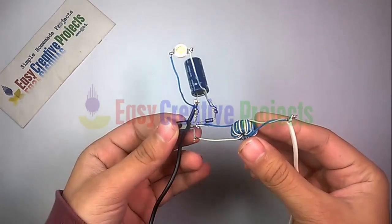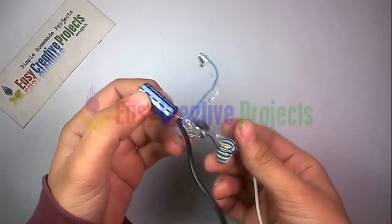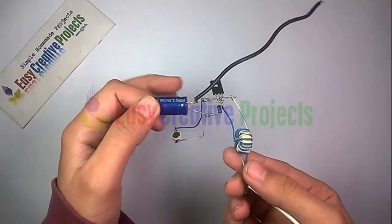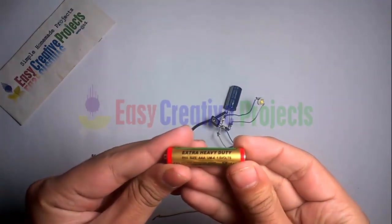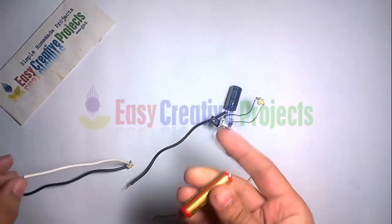Now connect all components on the PCB board using the circuit diagram. Project is ready for test. You can see when we connect the LED with direct cell, then the LED is not glowing.